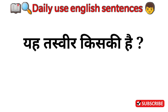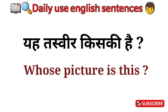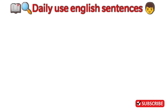The first sentence is: 'Yoh tasweer kiski hai' — in English we say 'Whose picture is this?' We can also use 'photo' in place of 'picture': 'Whose photo is this?'